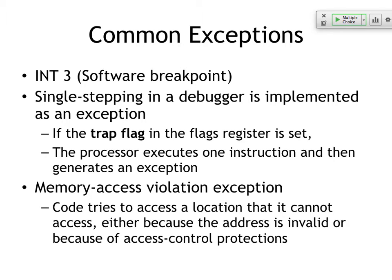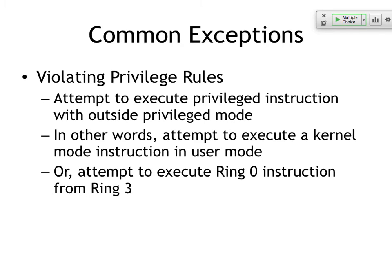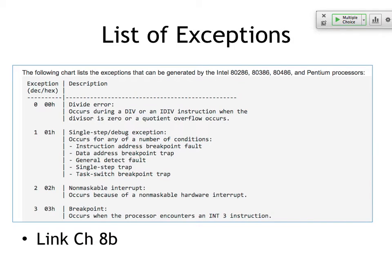INT3 is the most common exception — this is how you do single steps and breakpoints in the debugger. You can also set a trap flag in the flags register and that will do single steps, replacing each sequential instruction with CC. Then there are memory access violation exceptions — this happens a lot in exploit development because you start by injecting letters and eventually try to execute code at something like address 0x41414141 because you put in a bunch of capital A's, referring to memory locations outside the allocated space. You can also violate privilege rules — like trying to execute a kernel instruction while not running in ring 0.